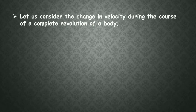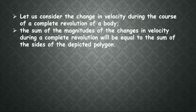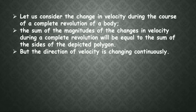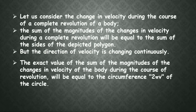Let us consider the change in velocity during the course of a complete revolution of a body. The sum of the magnitudes of the changes in velocity during a complete revolution will be equal to the sum of the sides of the depicted polygon. But the direction of velocity is changing continuously. So the exact value of the sum of all changes in velocity during one revolution will be equal to the circumference, that is 2πr. But here r is v, so hence 2πv.